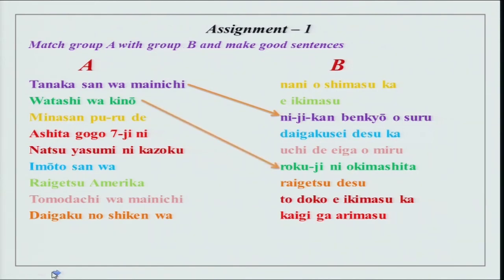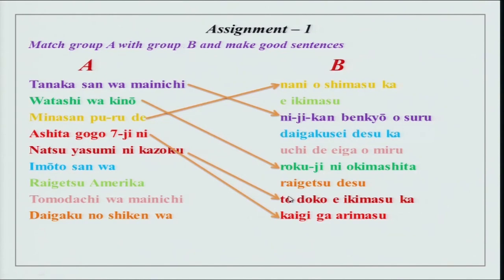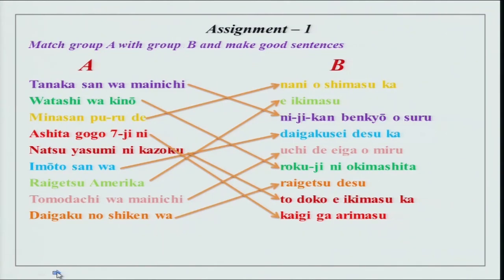Watashi wa rokuji ni okimashita — past form. Ashita gogo shichiji ni kaigi ga arimasu. Can you tell me what is the plain form for arimasu? It is aru. Natsu yasumi ni kaizoku to doko e ikimasu ka? Kaizoku to issho ni is omitted here. Imoto-san wa daigakusei desu ka? Raigetsu Amerika e ikimasu. Tomodachi wa mai-nichi uchi de eiga wo mimasu, or miru as given. Daigaku no shiken wa raigetsu desu. I hope this was all correct.